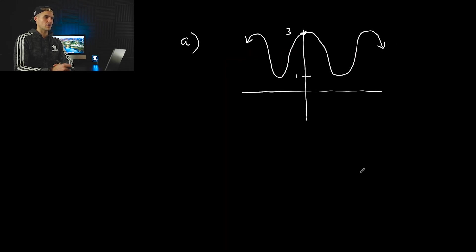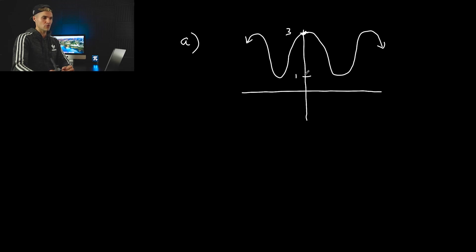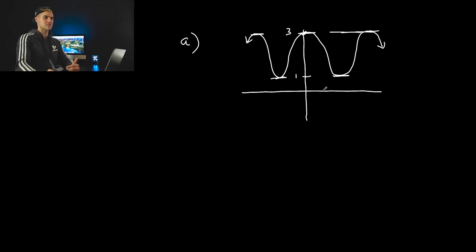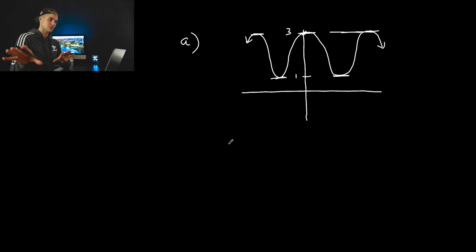Starting off with part A, notice that we have a wave graph here. The Y values are fluctuating between a minimum of 1 and a maximum of 3. This is basically a sinusoidal function, and it's just going to keep fluctuating infinitely in both the positive and negative directions.